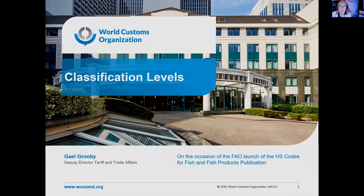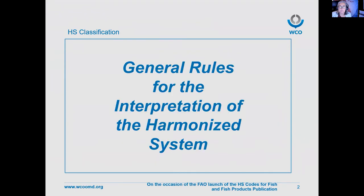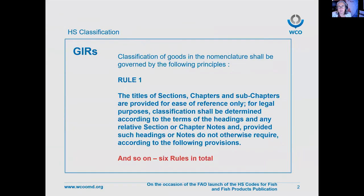As part of the introduction to this exceptional new FAO publication, HS Codes for Fish and Fish Products, I will do my best to encapsulate the main points. HS classification occurs within a structured framework that starts with the General Rules for the Interpretation of the Harmonized System, generally referred to as GIRs. The GIRs are a set of six rules which govern how you can legally classify within the HS.